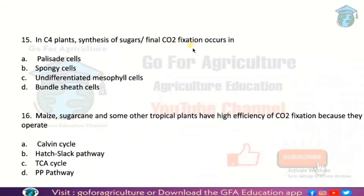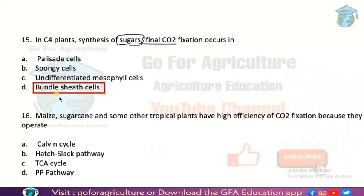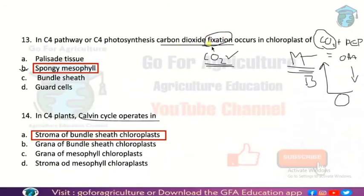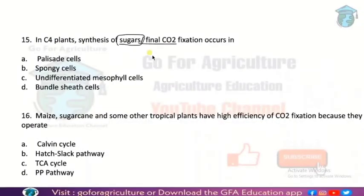Next: in C4 plants, synthesis of sugar (glucose) and final CO2 fixation occur where? In the last question, CO2 fixation started in mesophyll cells, but here the question is about FINAL CO2 fixation — which means sugar synthesis. This is different. Final CO2 fixation means sugar synthesis, and that occurs in the bundle sheath cells. Option D.